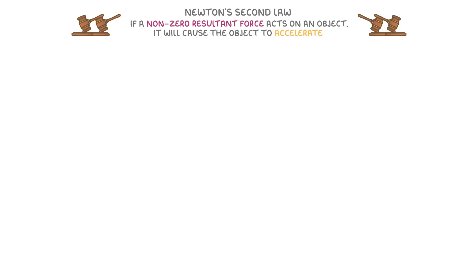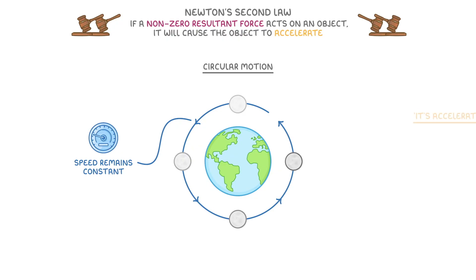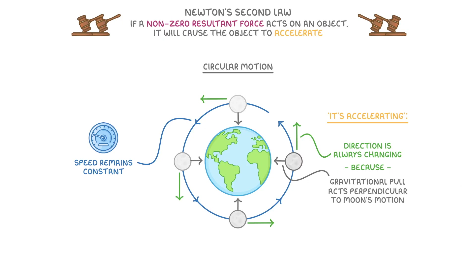We can see this in practice if we look at circular motion, like the orbit of the moon around the earth. Even though the speed of the moon remains constant, we still say that it's accelerating, because its direction is always changing slightly. This happens because the earth's mass exerts a gravitational pull on the moon, which acts perpendicular to the moon's motion. So overall, the moon ends up spinning around the earth with a constantly changing velocity, because the direction is changing, but a constant speed.